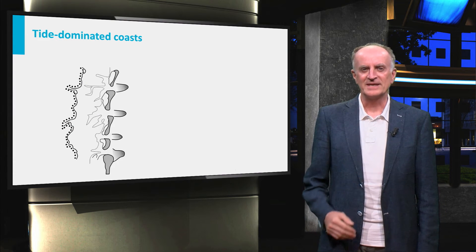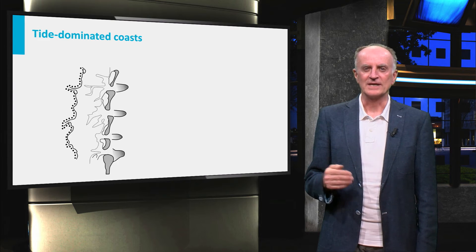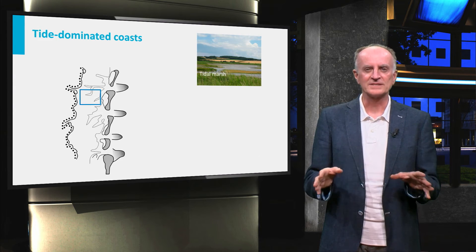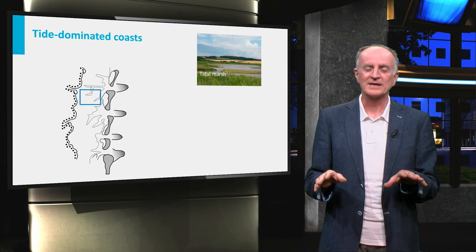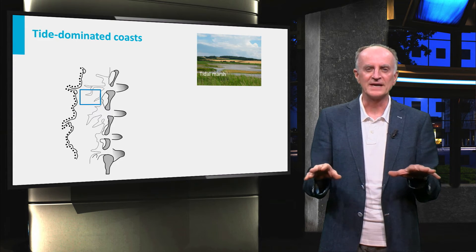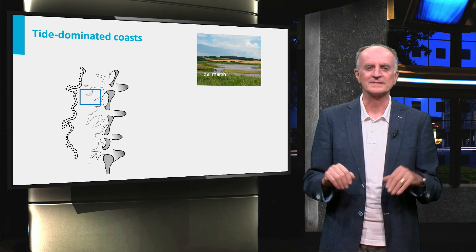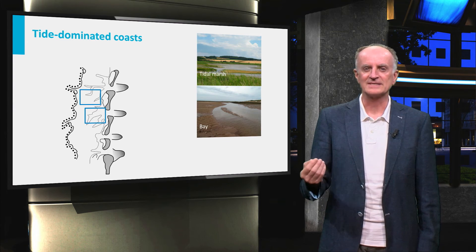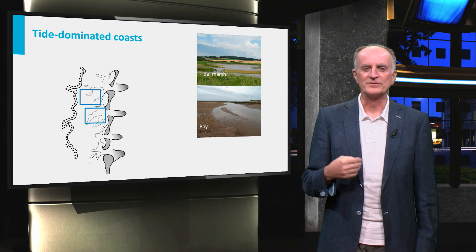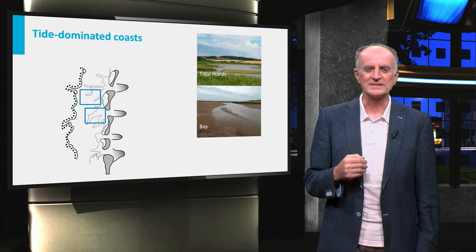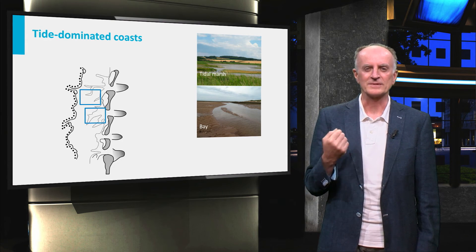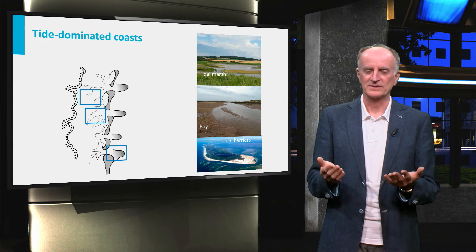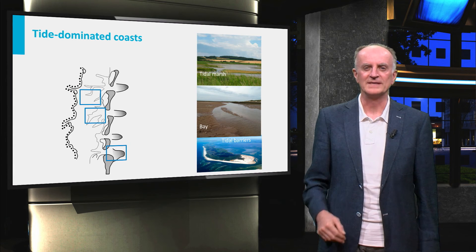This is what a tide-dominated coast looks like. The wide intertidal zone is characterized by marshes and standing waters, typically with fine-grained sediments and very active biologic communities. The tidal channels are a distinctive feature of tidal systems and accommodate the movement of waters and sediments to the sea and backwards. Tidal barriers and inlets form the last important features typical of tide-dominated coasts.